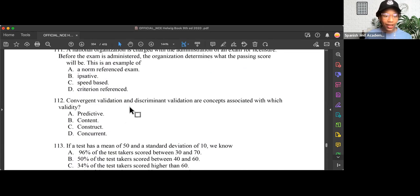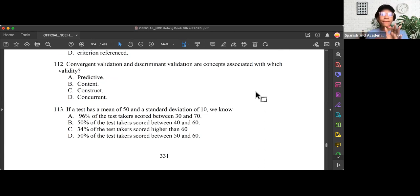Last one. Question 113. If a test has a mean of 50 and a standard deviation of 10, we know—more numbers, don't freak out. Go with what you know. If you have been studying your normal bell curve, you would know that if a test has a mean of 50 and a standard deviation of 10, we are talking about a T score. Because a T score has a mean of 50 and a standard deviation of 10. You also would know that the only time we talk about a standard deviation is when we're referring to the normal bell curve. So you would know, this is the 68-95-99 rule. We also have just learned that 95 can be rounded up to 96. If you know that rule alone, honestly, you could knock out B, C, and D.